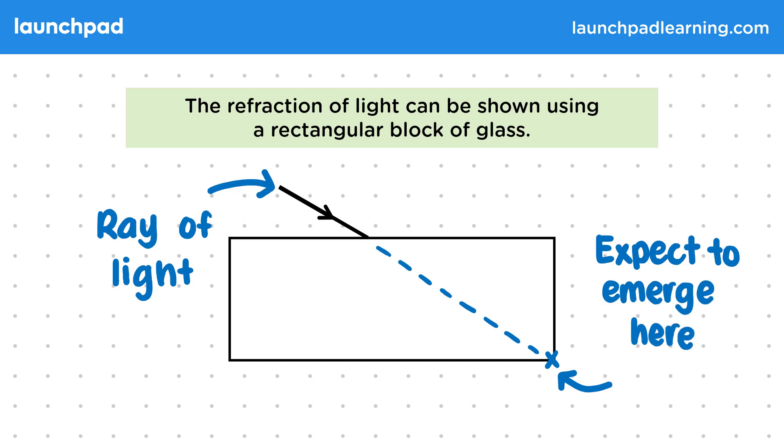However, we actually see the ray of light emerge from the glass here and then continue at the same angle it entered the glass at. This means that the ray's path must have changed in the glass. So we've demonstrated refraction.